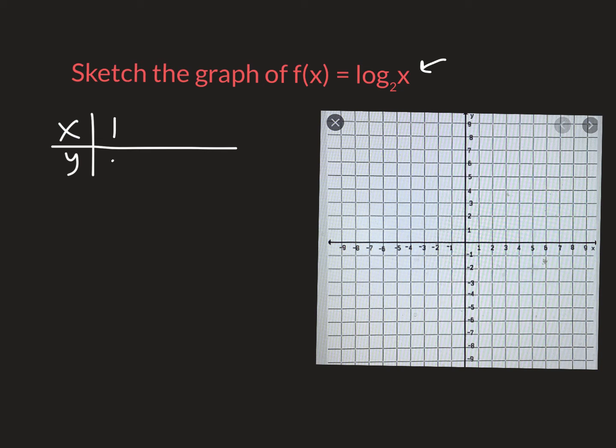So I'm gonna start just putting 1 in there. So I put 1 in for x, y has to be 0 because 2 to the 0 power is 1. If I put 2 in there, 2 to the first power is 2. I'm gonna put a 4, but only because 2 squared is 4, so it's going to be 2.